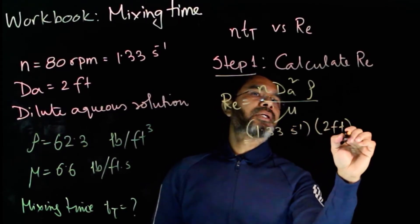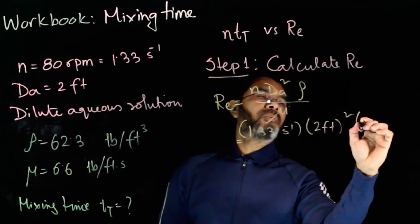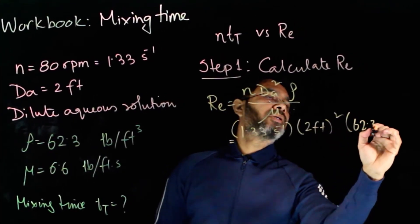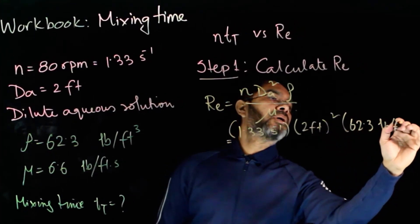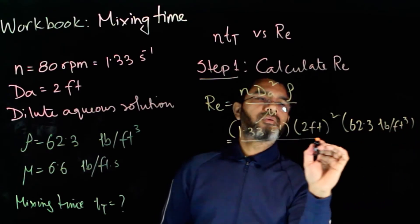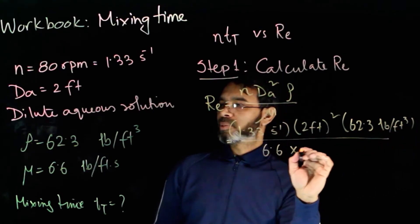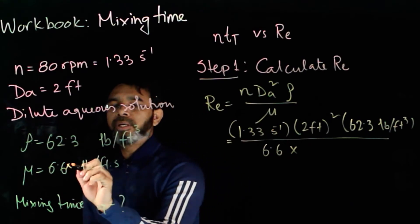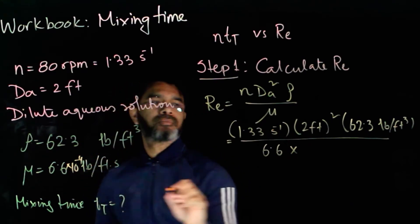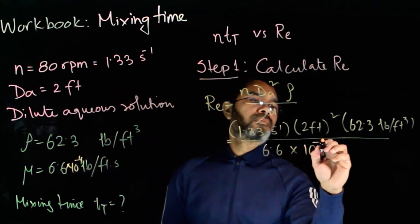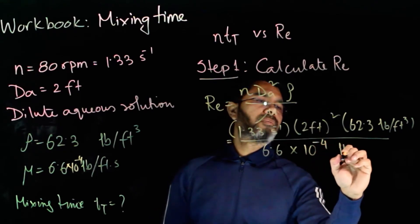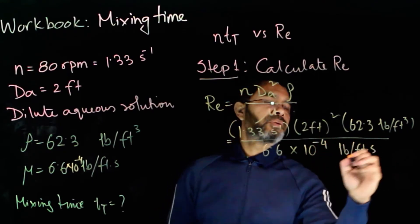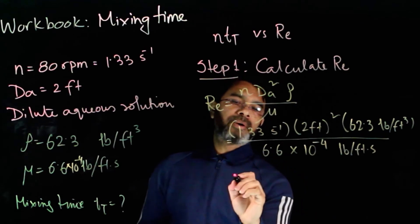2 feet squared, ρ will be 62.3 pounds per cubic foot over 6.6 × 10⁻⁴ pounds per foot-second. This gives the value of Reynolds number to be 50,218.